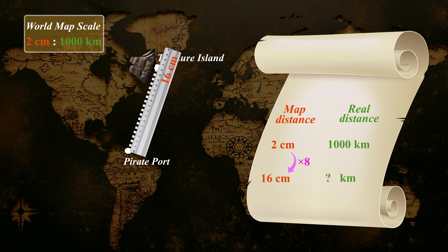The map distance is eight times the scale distance, so the real distance is 8 multiplied by 1,000. From pirate port to treasure island is 8,000 kilometers.